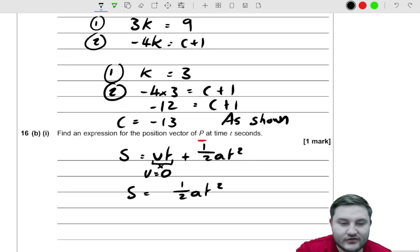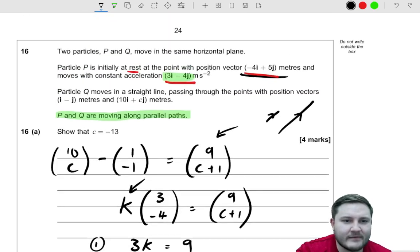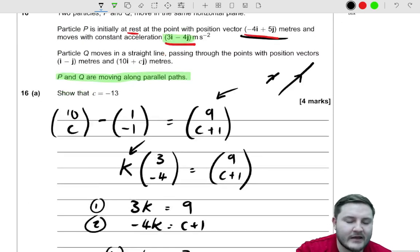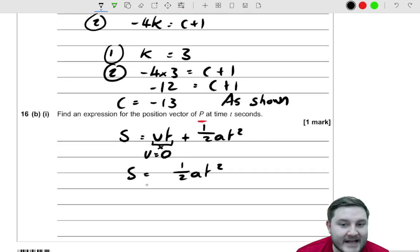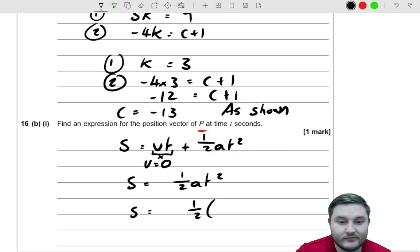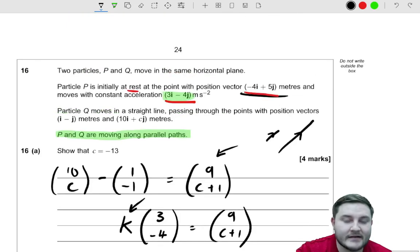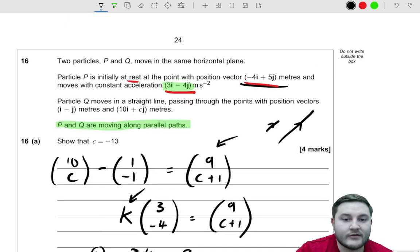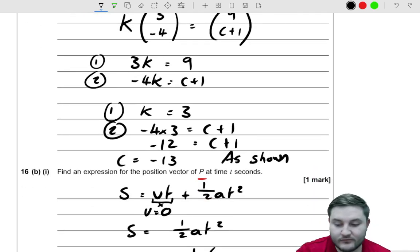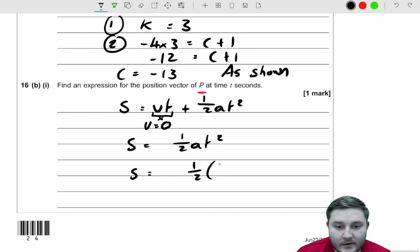Now, here, it can be traditional to give the positional vector as R instead of S. But I'm going to keep it as S. I don't think it really matters. So S is equal to a half times the acceleration, which I'm going to write as a column vector. The acceleration was (3, -4). T squared.